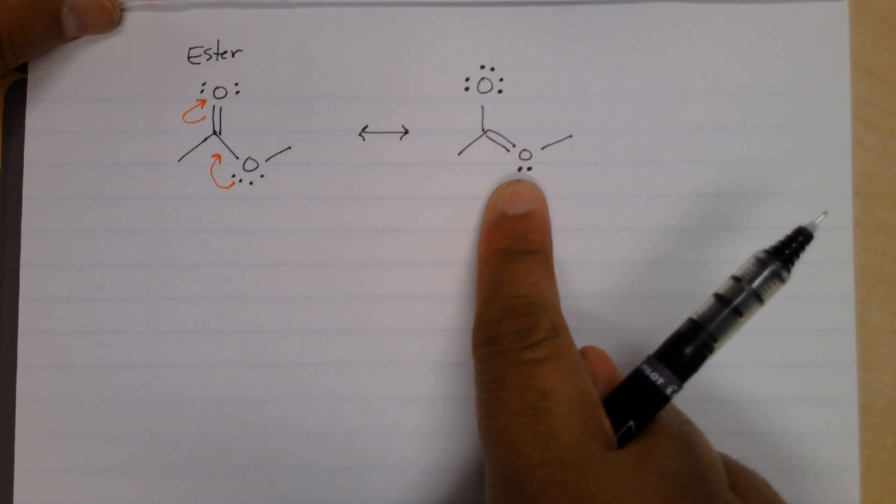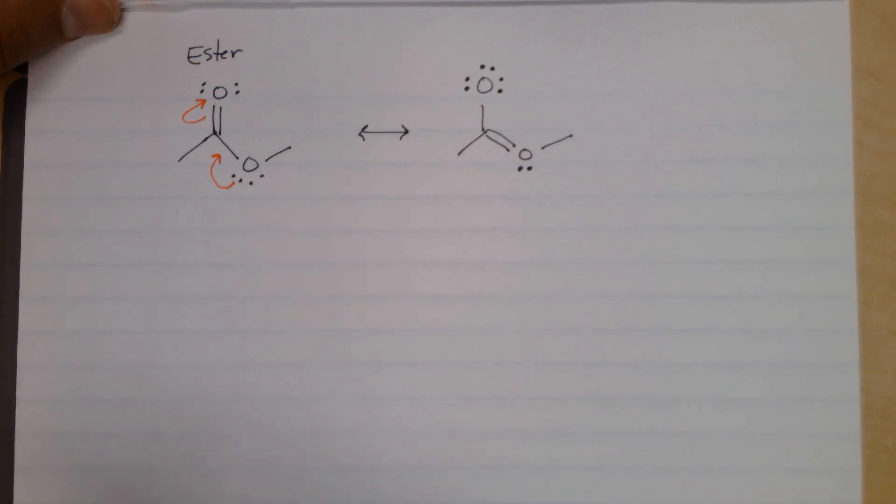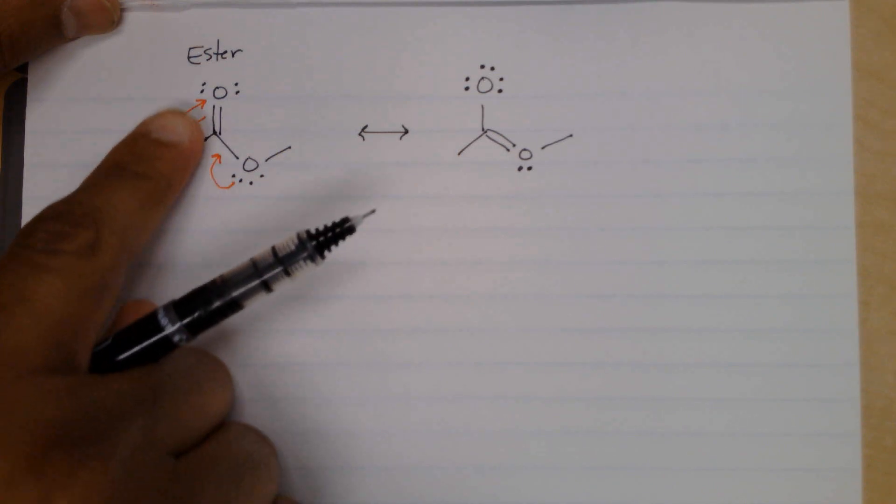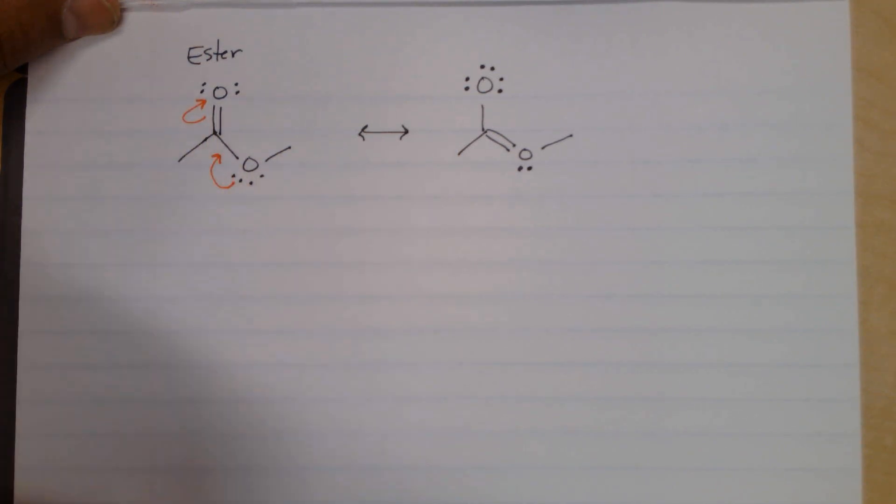And of course, you should always check the formal charges have changed. So we watch closely here. Both oxygens have two bonds and two lone pairs, so the formal charges are zero.